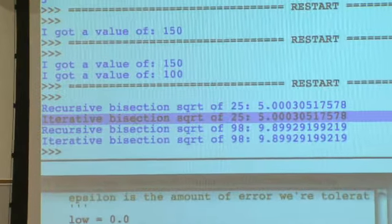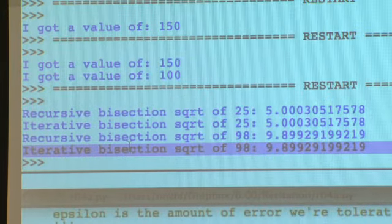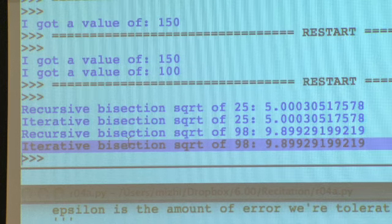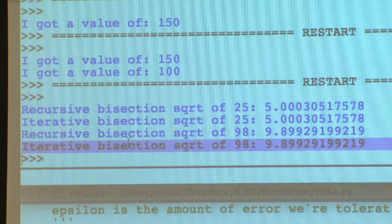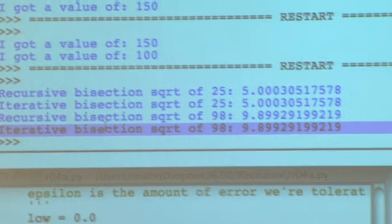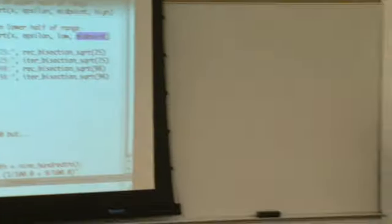If it's too low of a guess, we're going to recursively call ourselves with the same x, same epsilon, but we're going to use midpoint for the low parameter and the same high parameter. If we've guessed too high, then our low parameter is low and our high parameter is the midpoint. It's doing the exact same thing as the iterative version.